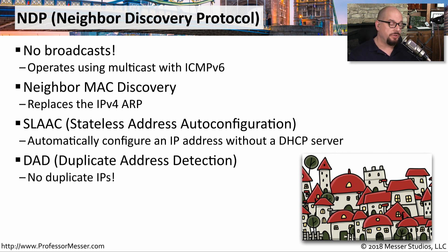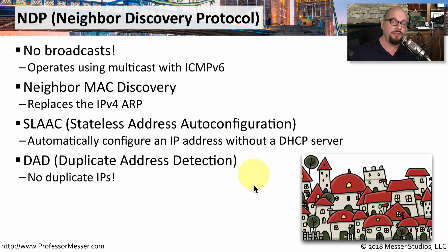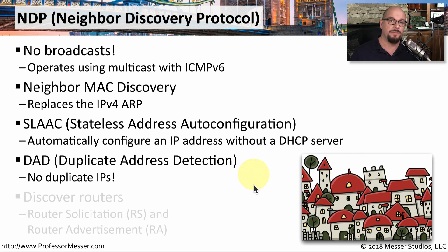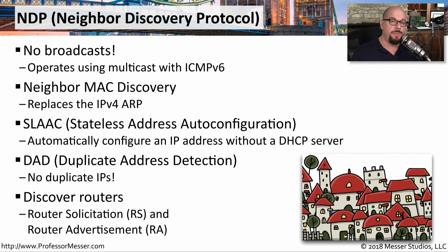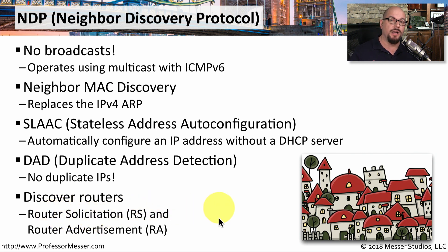NDP is also used for DAD, or Duplicate Address Detection, in IPv6, which allows IPv6 devices to make sure that duplicate IPs are not being used on the network. Another function of NDP is the ability to find routers that might be on your network. We do that by using router solicitation and router advertisement features of the Neighbor Discovery Protocol.